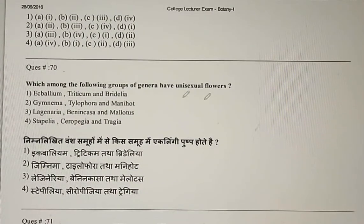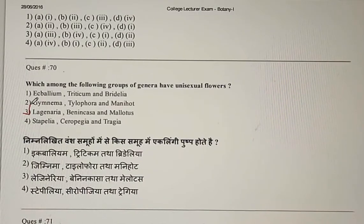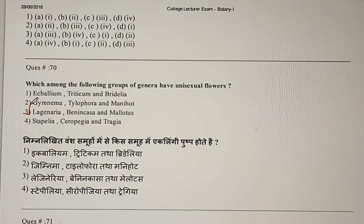Question 70: Which among the following groups of genera have unisexual flowers? The correct answer includes Lagenaria, Benincasa, and Mallotus.